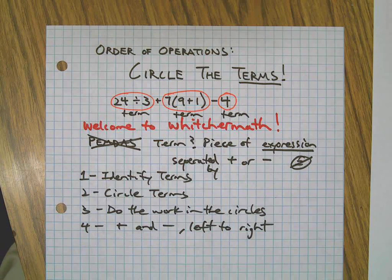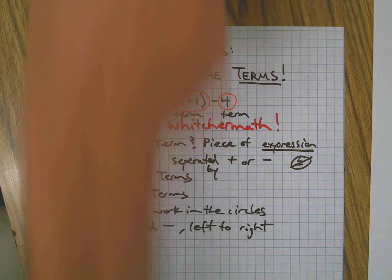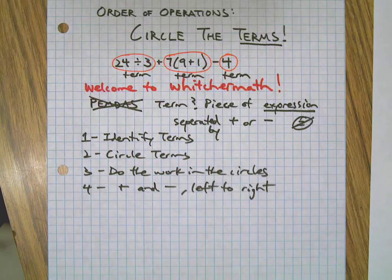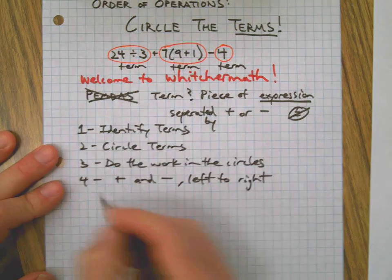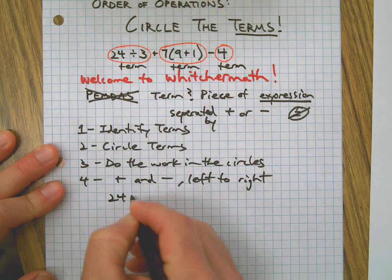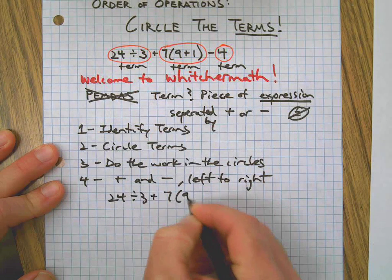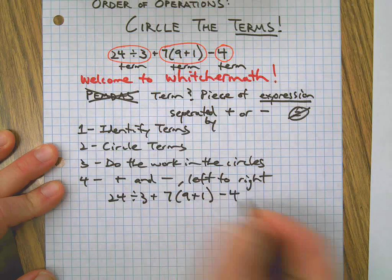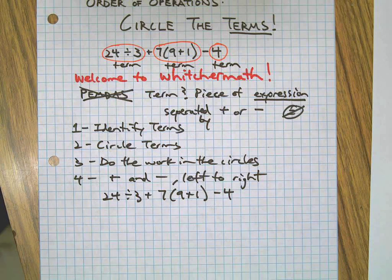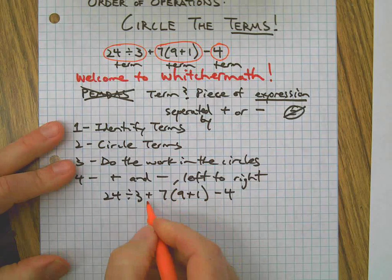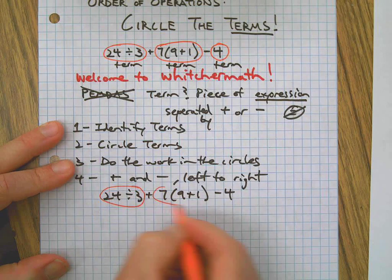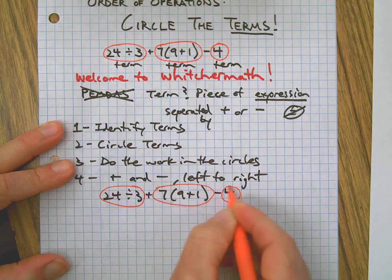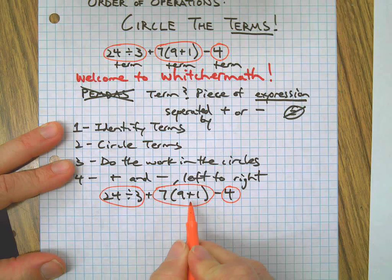There's our four steps. Let's do a couple of problems and check this out. Let's start with the one I already wrote on the page. We've got 24 divided by 3 plus 7 times the quantity 9 plus 1 minus 4. First we identify terms - we're looking for addition and subtraction signs. There's one and there's one, so here's a term, here's a term, and here's a term.